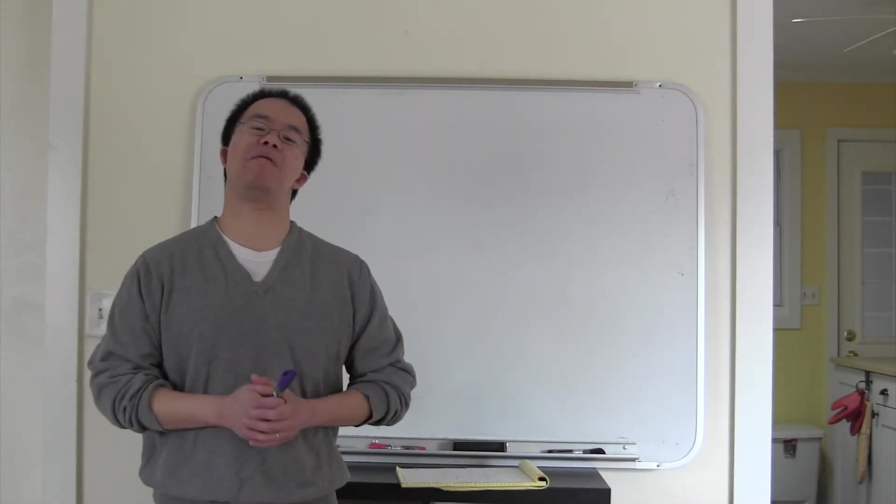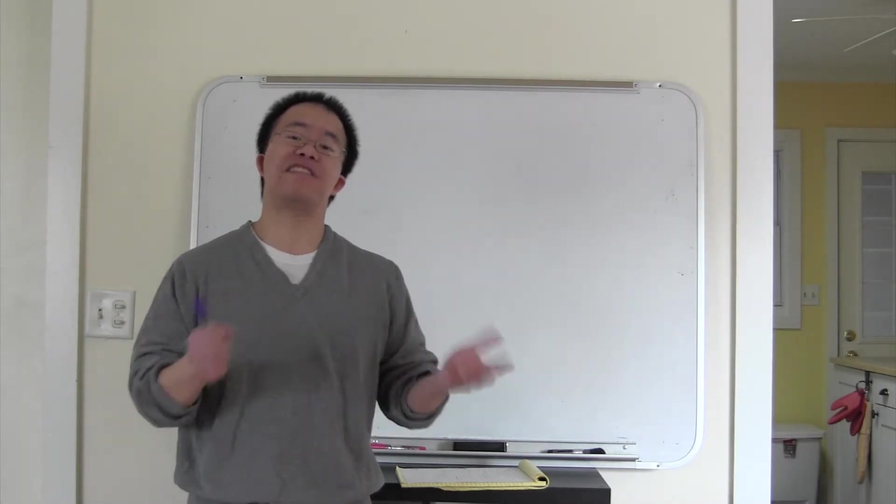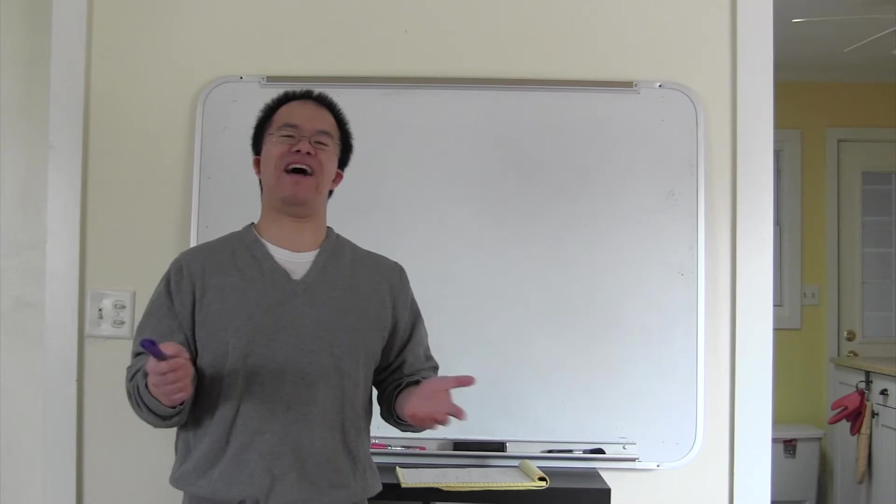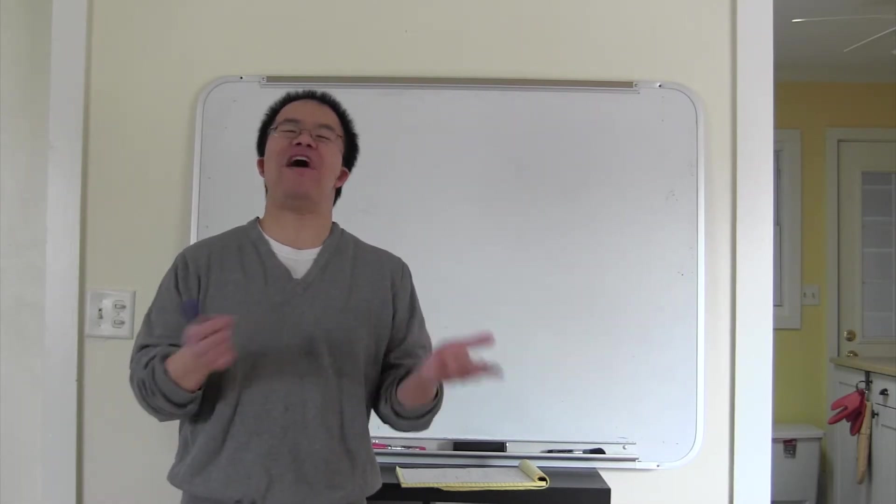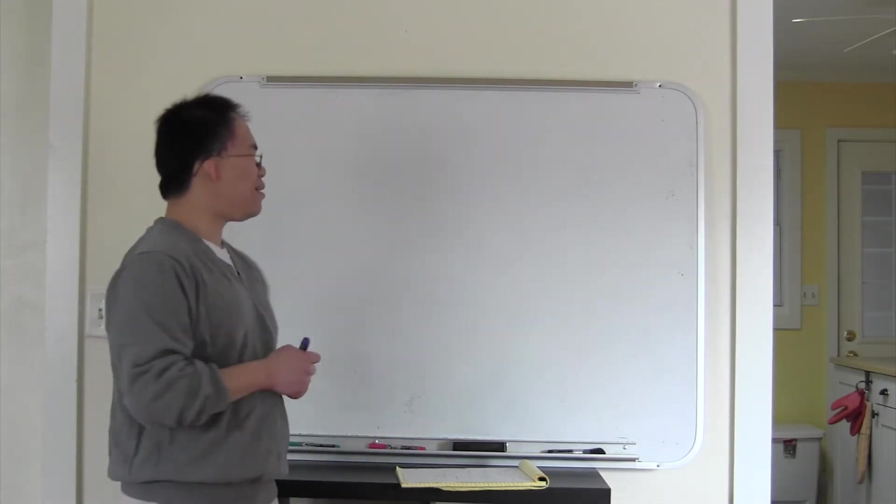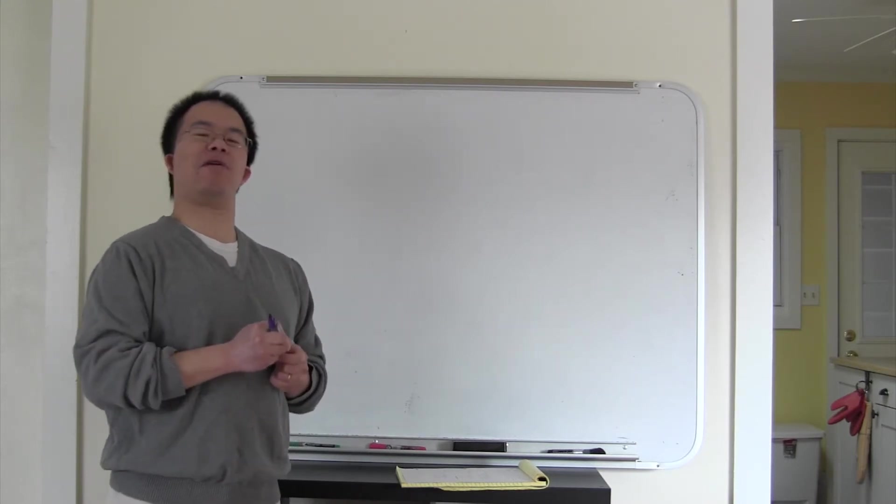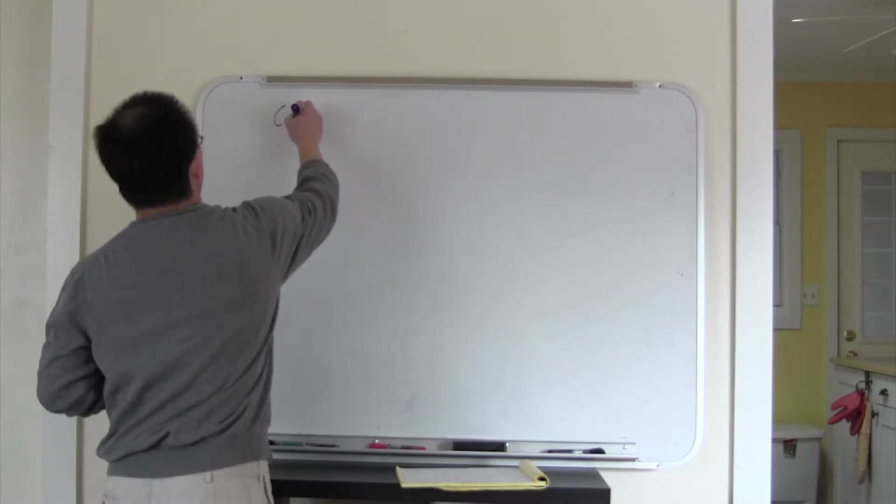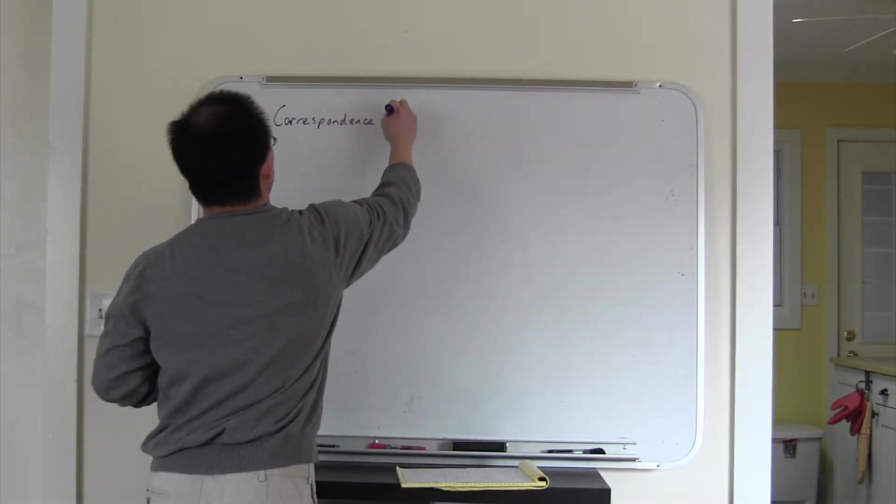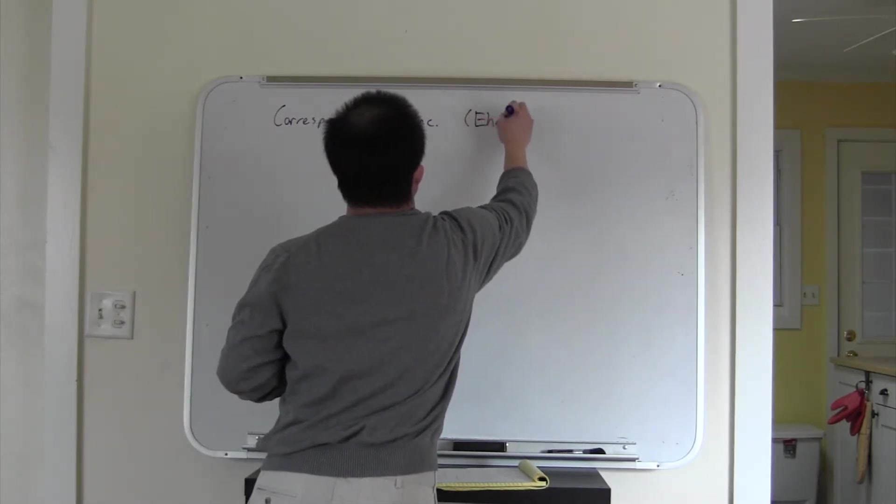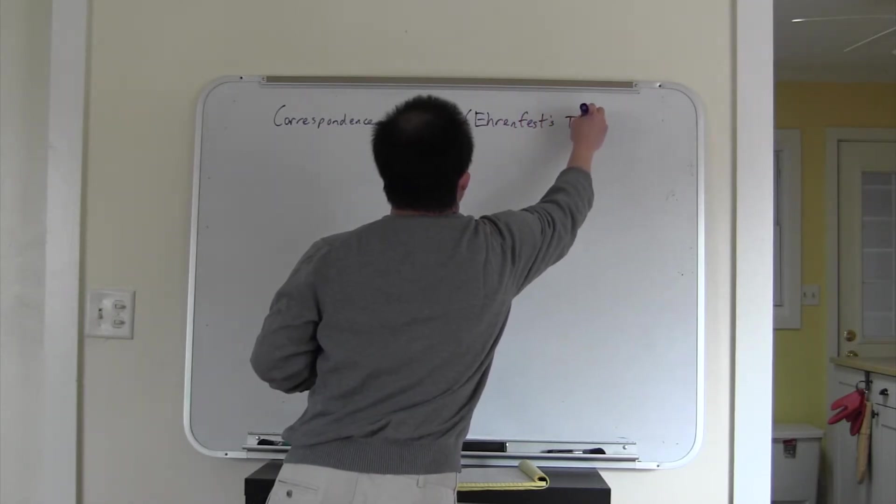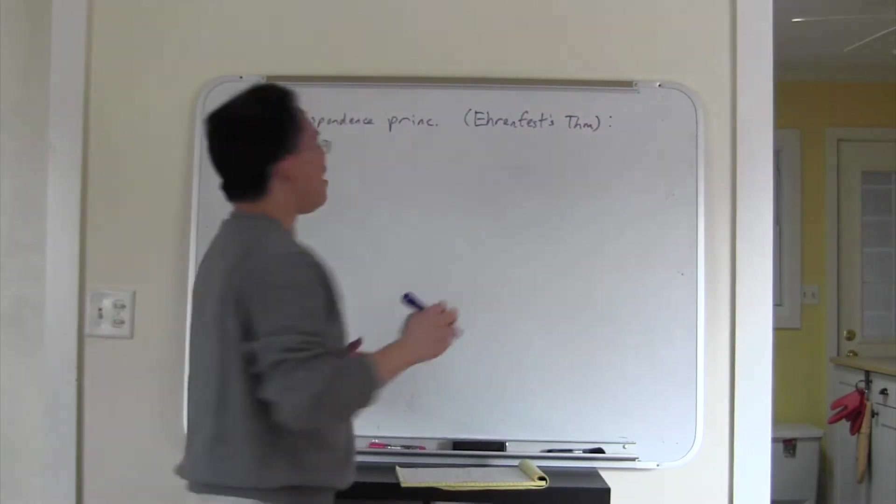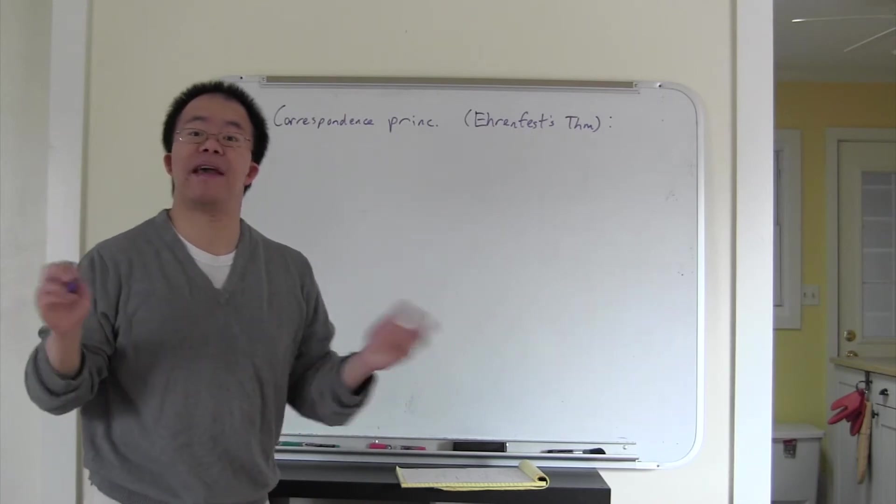You may be wondering how we can go about calculating momentum expectation values. Because in quantum physics, we've already seen that a particle doesn't have a definite position. Well, if something doesn't have a definite position, how can we even define its velocity in a sensible way? Well, the answer comes from an idea that we call either the correspondence principle or Ehrenfest's theorem, after the German physicist Paul Ehrenfest.